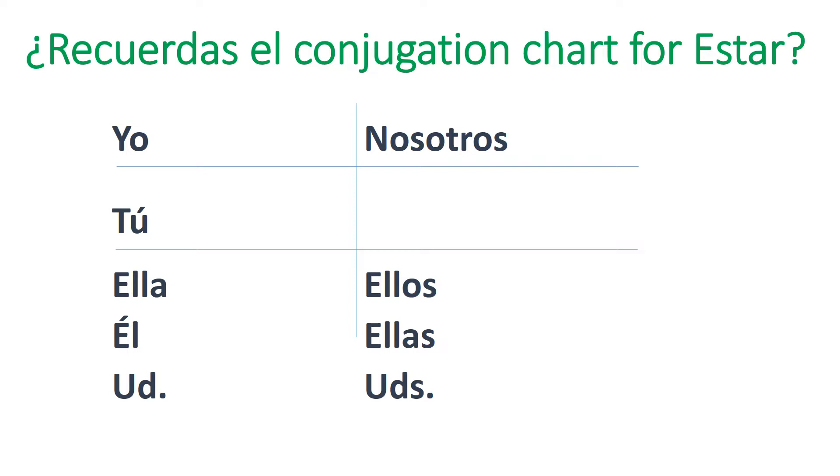Remember, we use estar for feeling and conditions, emotions and so forth. Location and position. And we also use it for things that we're doing, like actions. Hint, hint, present progressive. What we're doing right now. So that's why we're going to be using estar in these sentences because they're going to be sentences in the present progressive. Things we are doing right now.